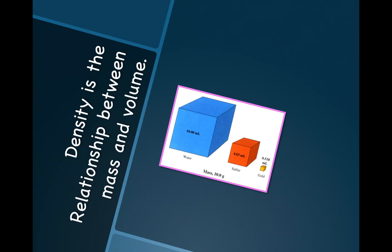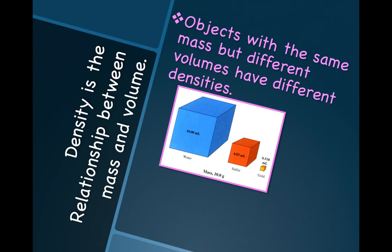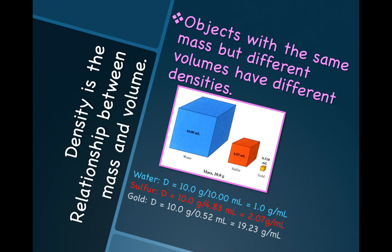Now let's consider three blocks that all have the same mass of 10 grams. Objects with the same mass but different volumes have different densities. Can you predict which will have the greatest density: water, sulfur, or gold? Using our formula, density equals mass over volume. Did you predict that gold would have the greatest density? Density is mass divided by volume.